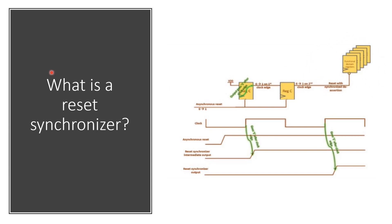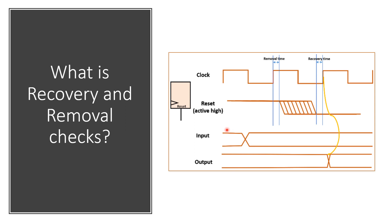Let us now see what a recovery and removal check is. A recovery and removal check is basically like a setup and hold for your reset signal. A recovery check ensures that the de-asserted reset signal allows the clock signal to take control of the output at the desired clock edge. For this, the reset signal must be stable at least the recovery time before the active clock edge and the removal time after the clock edge. This can be modeled similar to a setup check, with the difference of it being single-sided synchronous checks only.